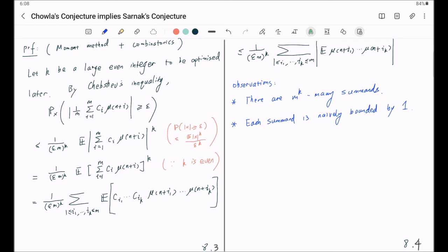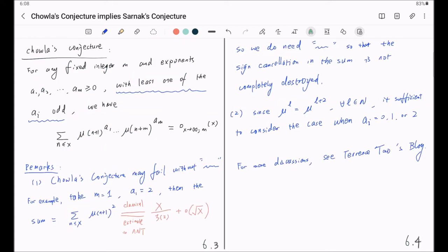What is non-trivial is our third observation. Now, let us recall the statement of Chowla's conjecture. Chowla's conjecture states that with at least one of the a_i's odd, we will have this sum having an estimate little o of x.